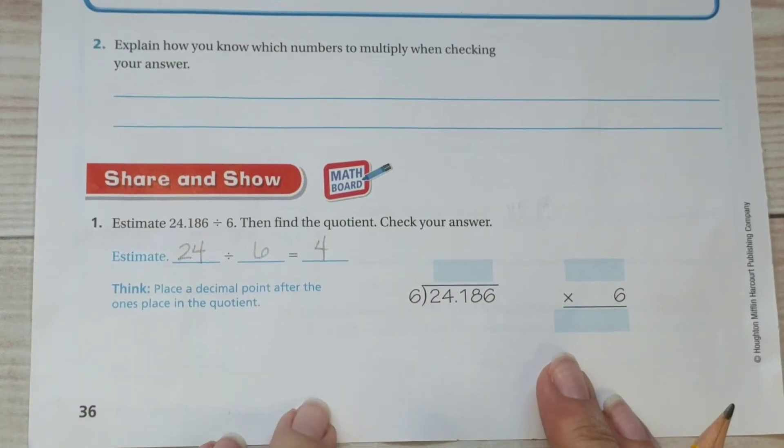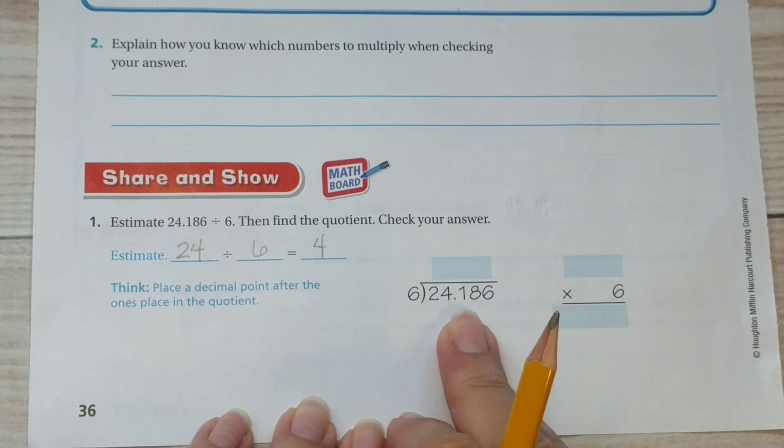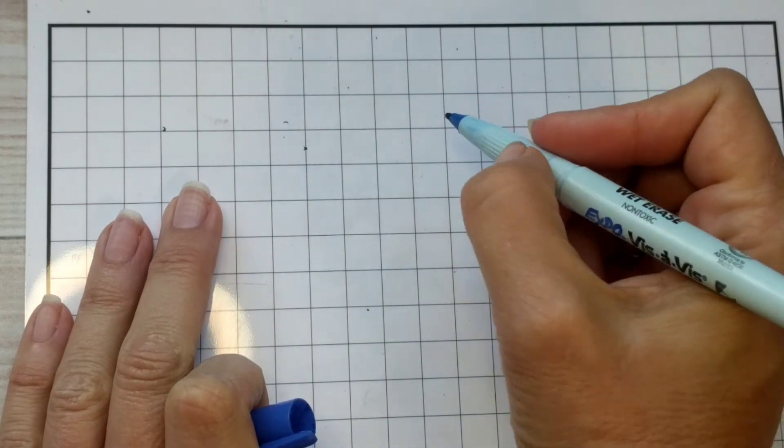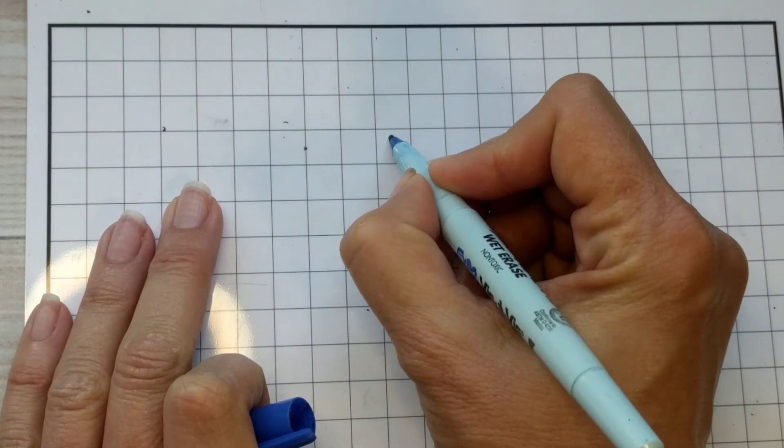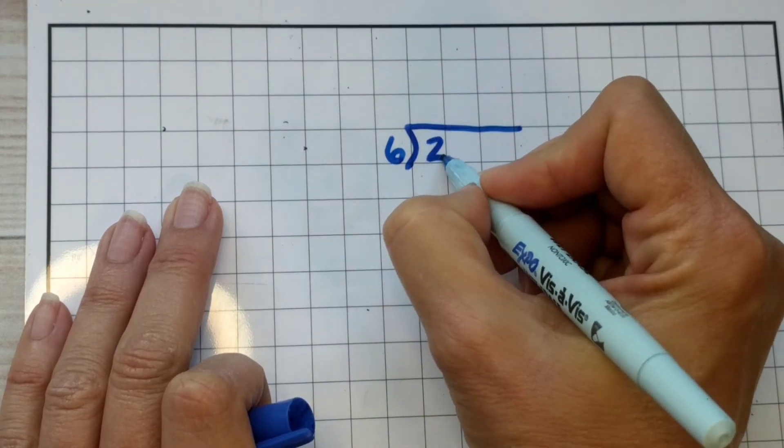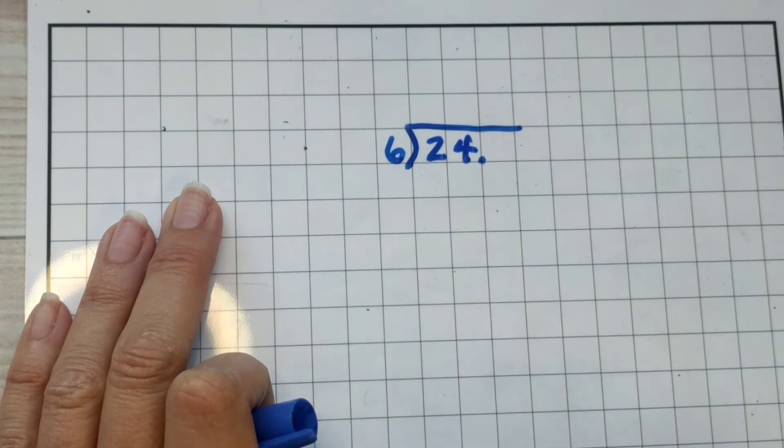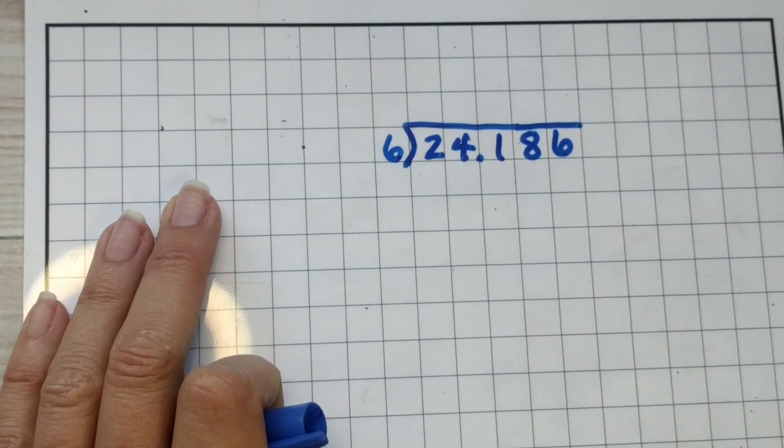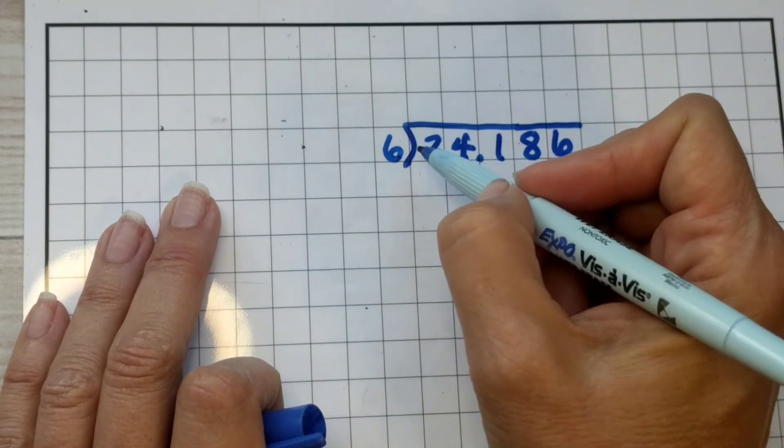So they didn't give us a whole lot of room to work here. Plus, I just like using graph paper to line up my problems. I think it helps me stay organized. So, I'm going to use a little graph paper and transfer the problem on to here. So I have six as my divisor. I have twenty four. Notice each number gets its own square. And that's going to help us stay organized.